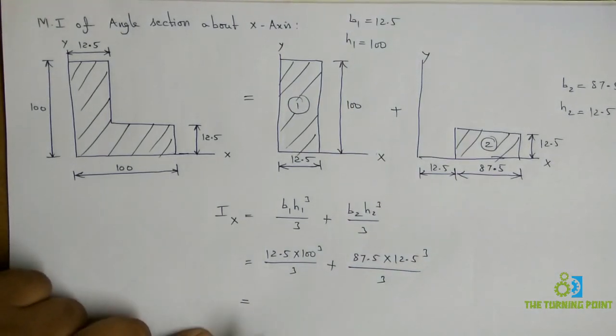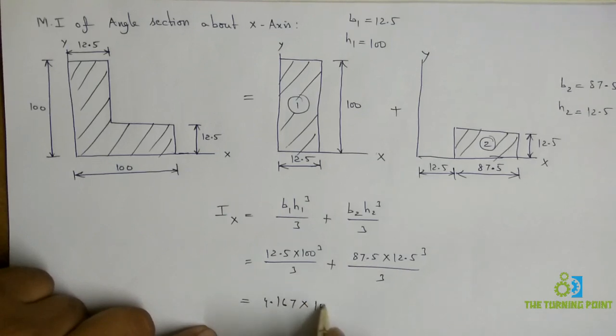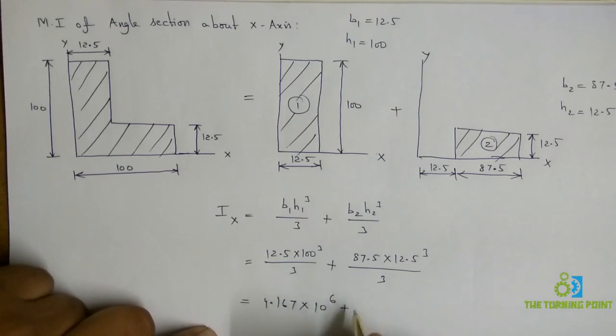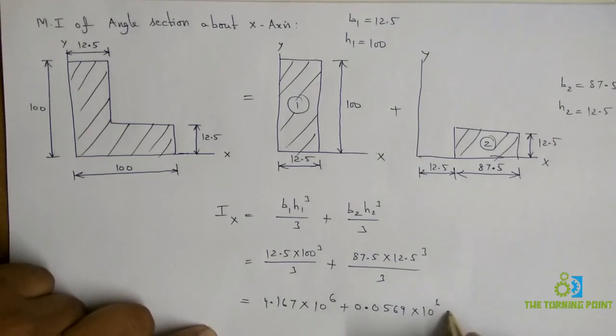When you simplify it, you will get 4.167 into 10 power 6, plus when you calculate this one, it will be around 0.0569 into 10 power 6. Add these two,